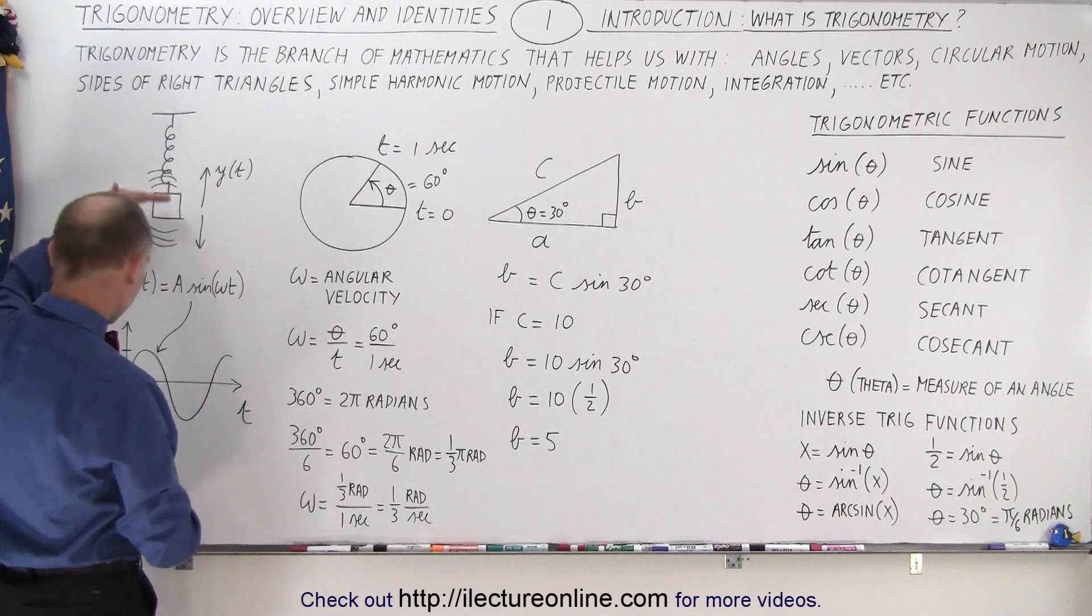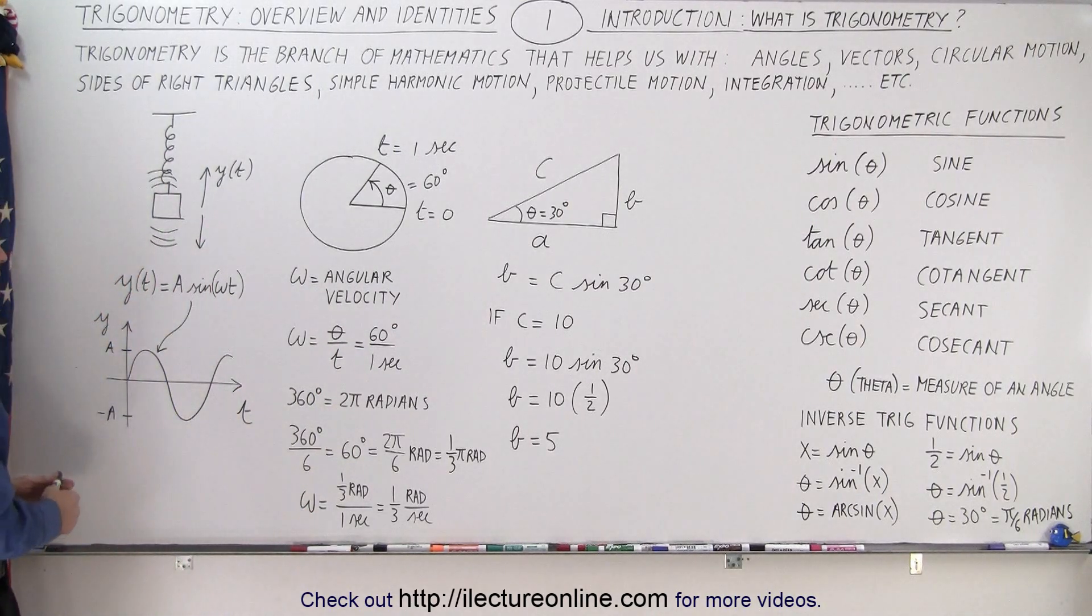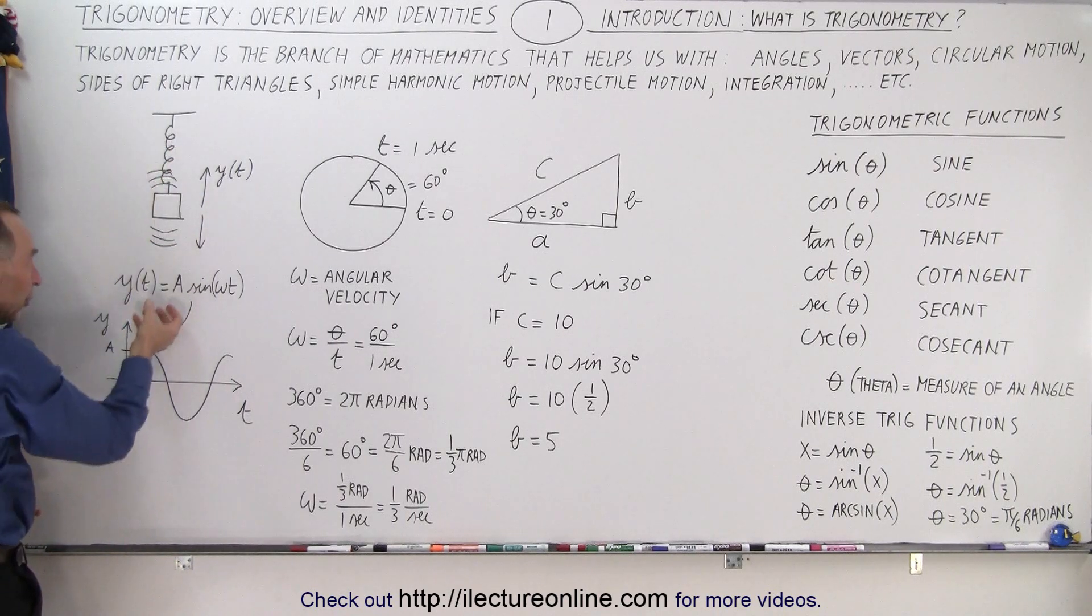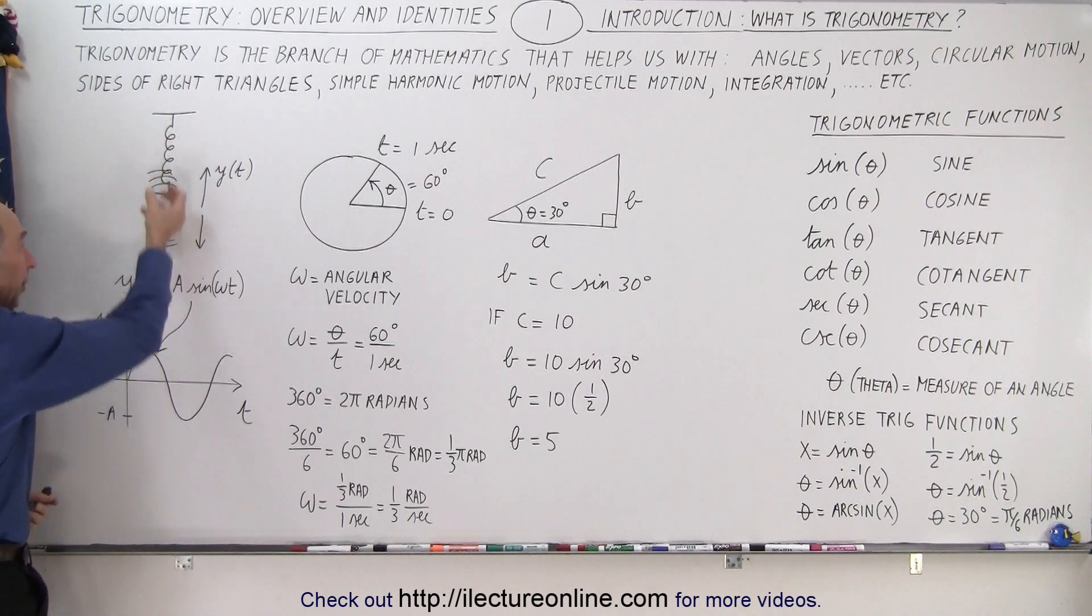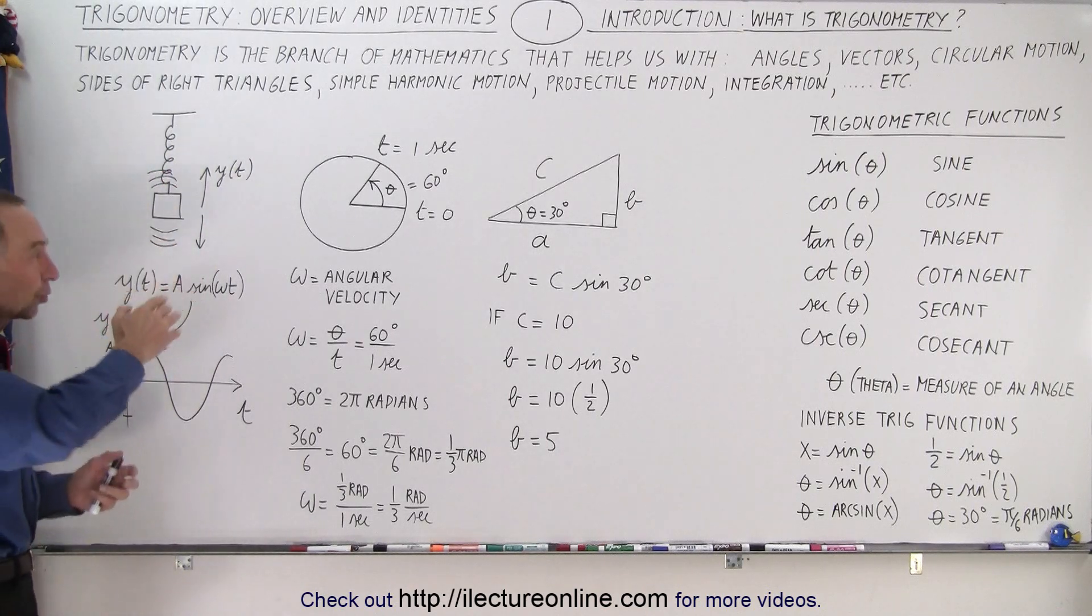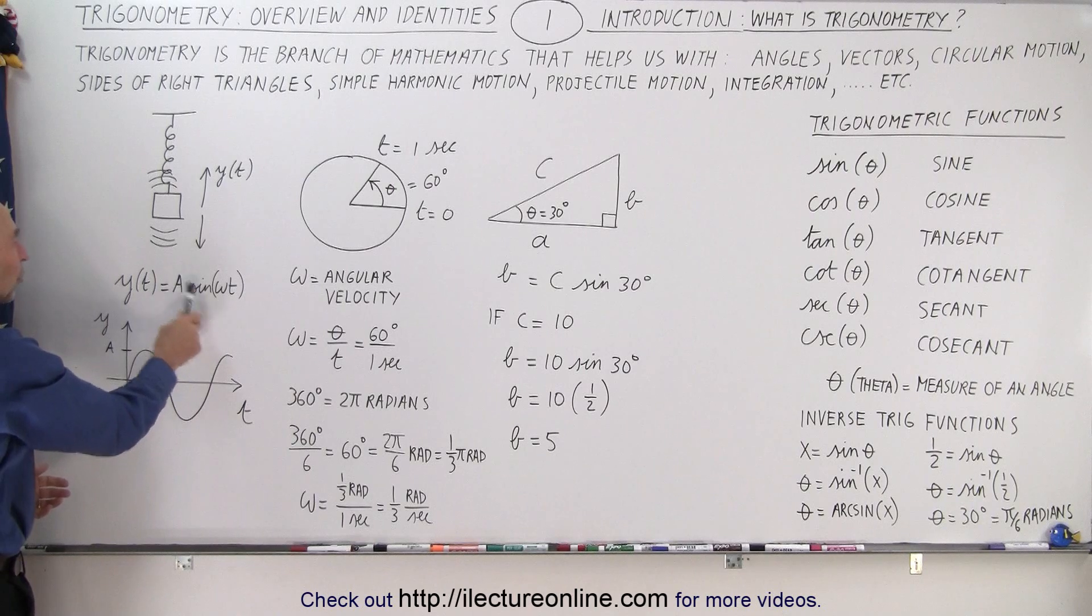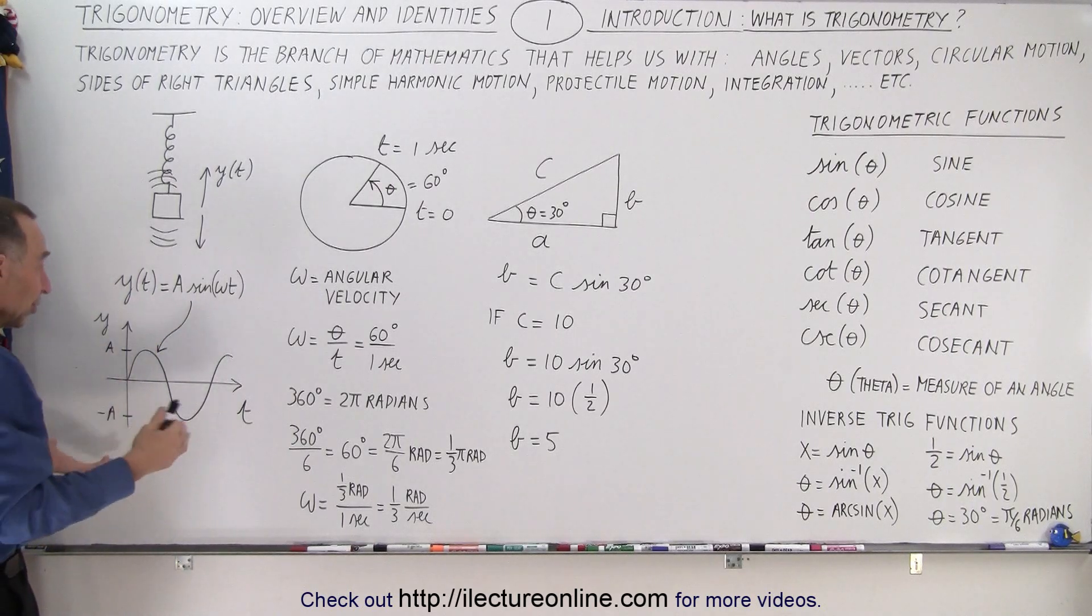Or we can use it for what we call simple harmonic motion. Here's an object hanging on a spring. When we pull on it and let go, it's going to go up and down and up and down. That's called a periodic motion or simple harmonic motion, and we can describe that using one of those trigonometric functions, the sine or the cosine.